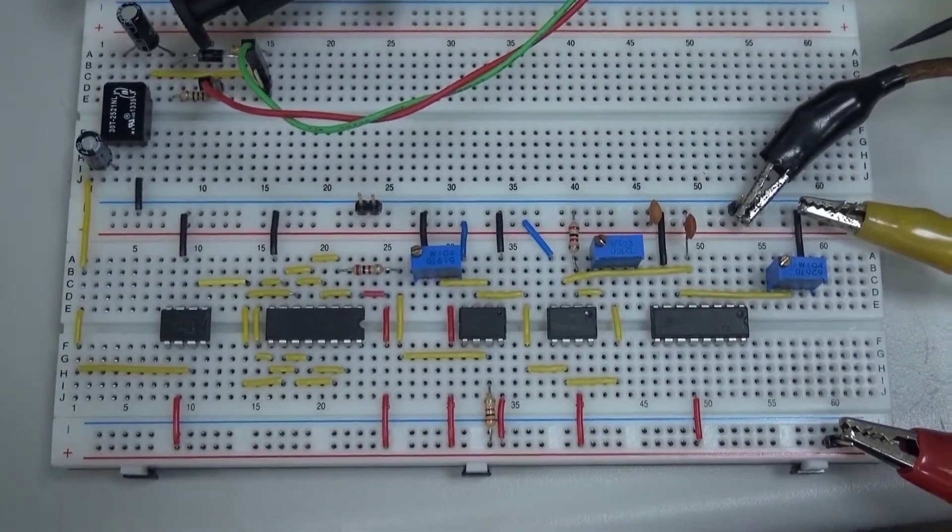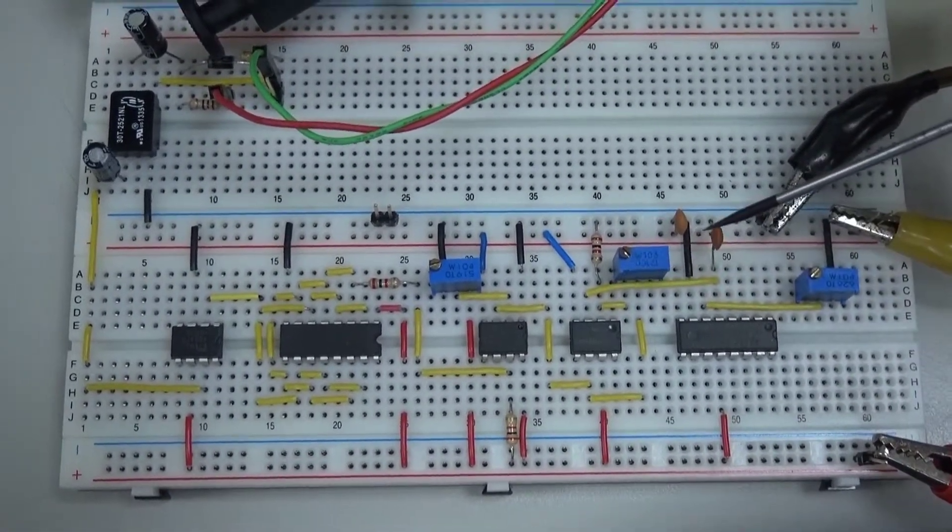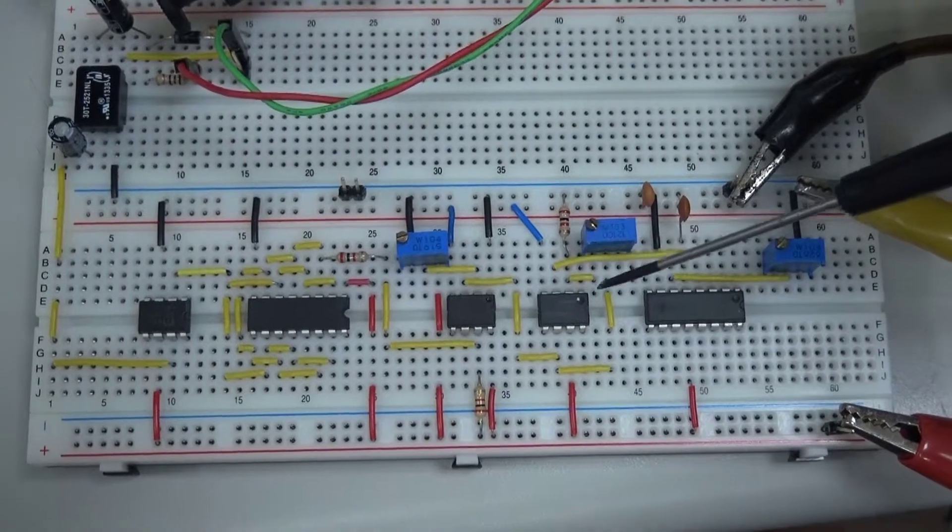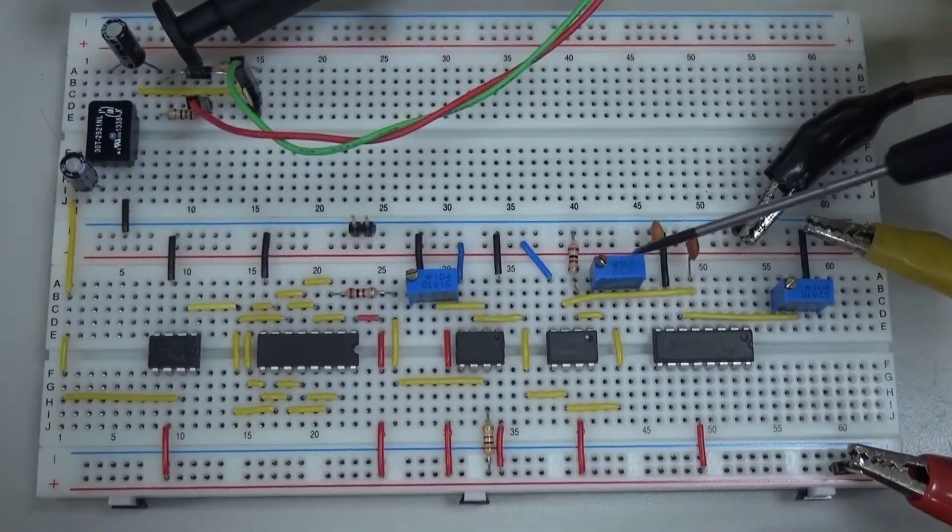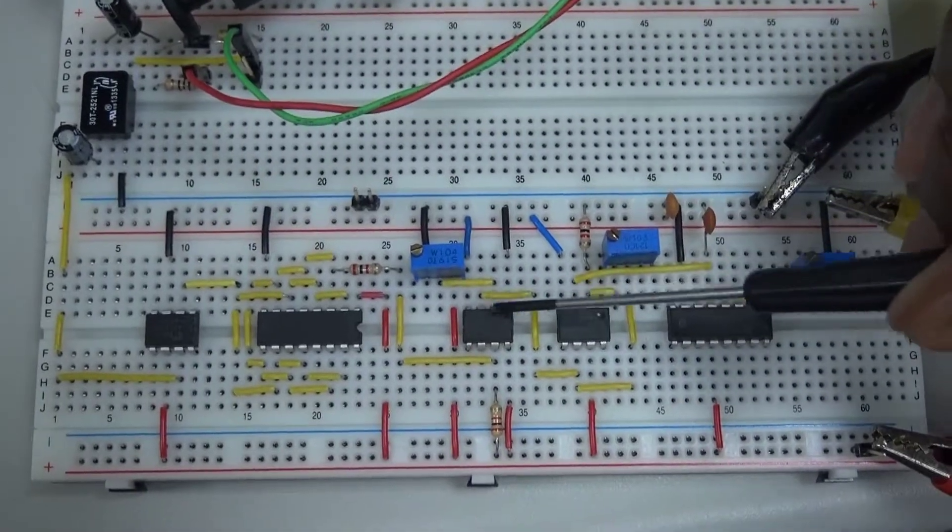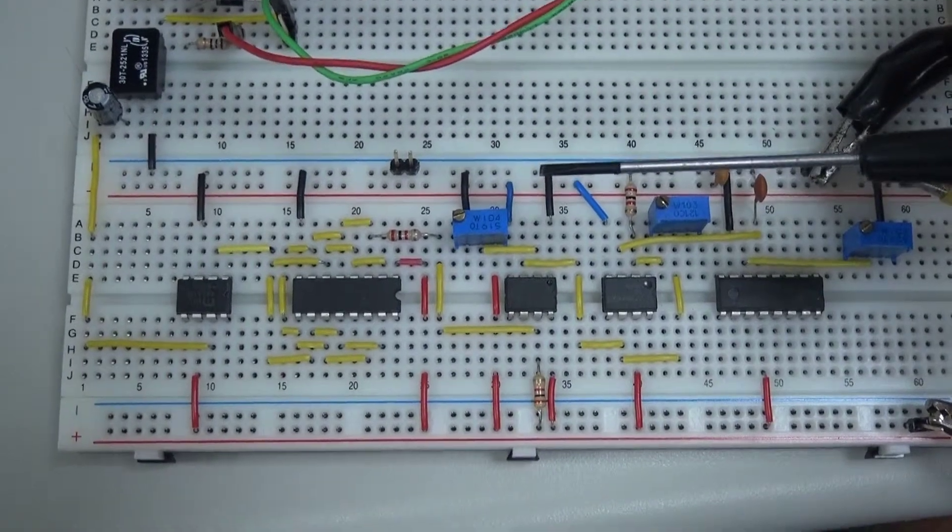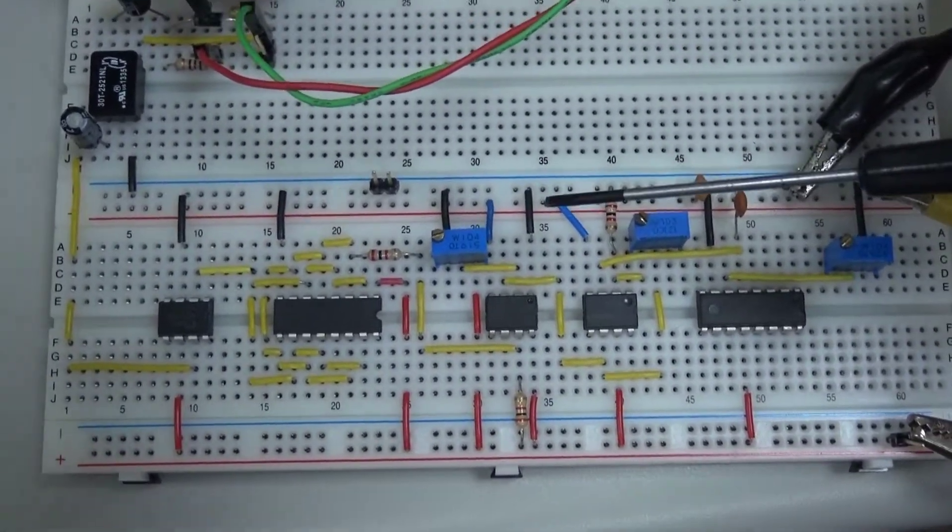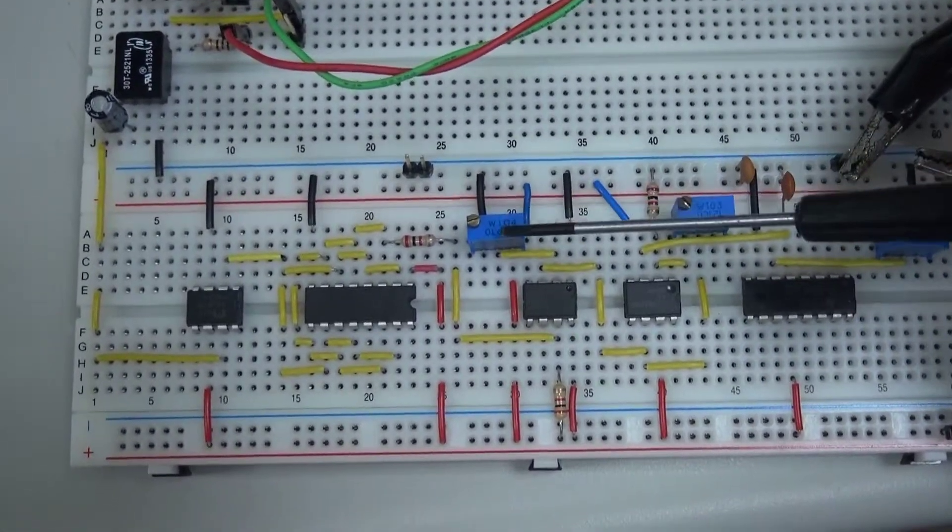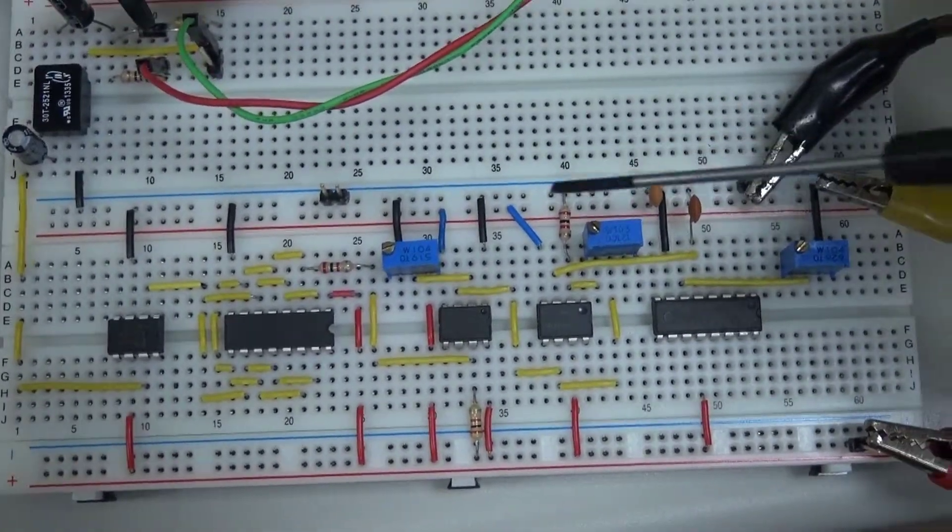Next, we have the LF356 op-amp in a non-inverting configuration, in combination with this trimmer located next to it, to produce a 10V peak sawtooth waveform. Next, we have the LM311, which will use the control voltage from this trimmer and compare it with our 10V peak sawtooth waveform, in order to produce a PWM signal of a certain duty ratio.